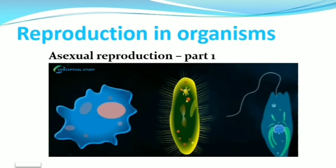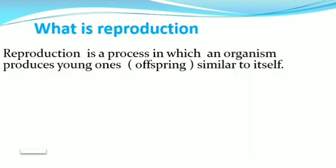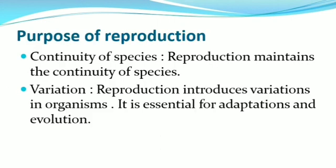In this video we are going to discuss about asexual reproduction — Part 1, Chapter 1: Reproduction in Organisms. Reproduction is a process in which an organism produces young ones similar to itself. There are several purposes of reproduction. Reproduction helps to maintain the continuity of the species — continuity means non-stop production. If reproduction stops, all species will become extinct, so reproduction is very essential for the survival of the species.